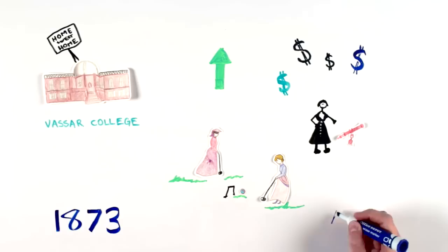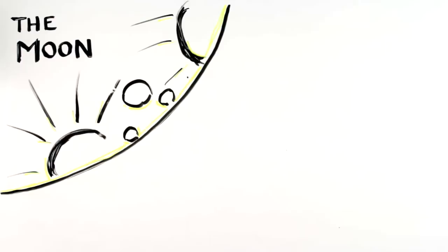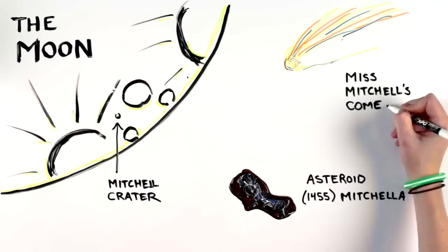After a lifetime of commitment to advancing science and advancing women, Maria Mitchell died in 1889 honored by scientists, educators, and students and continuing to inspire.